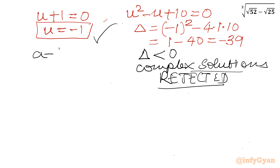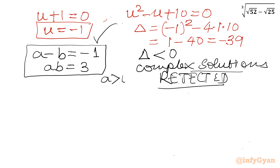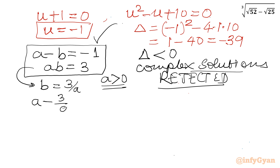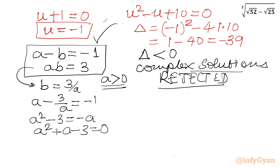So the value of u gives us a minus b equals negative 1, and our equation ab equals 3. Our target is to find a, which is positive. From the second equation, b equals 3 over a. Substituting into a minus b equals negative 1: a minus 3 over a equals negative 1. Multiplying both sides by a: a squared minus 3 equals minus a. So a squared plus a minus 3 equals 0. This is a quadratic equation and I will use the quadratic formula.